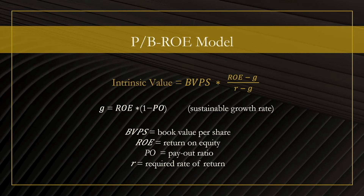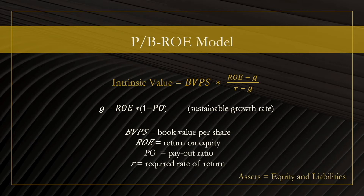To explain all the terms, firstly I will need to talk about equity. A company can raise capital in two ways. Firstly, it can borrow capital from creditors, like banks, and that is called liability. Secondly, it can raise capital from shareholders, and that is called equity. In summary, we have the balance sheet formula displaying that the value of the company's assets equals equity and liabilities.